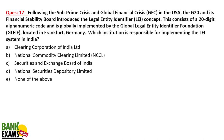After the subprime crisis and global financial crisis in the USA, the G20 and its Financial Stability Board introduced the Legal Entity Identifier. What is it? In India, to know the identity of a person or an artificial person — for example, a company — you have PAN, the Permanent Account Number for an individual, company, or HUF. But what about international transactions? How can you know the identity of an entity you are sending money to — for example, a person in Nigeria or the US?